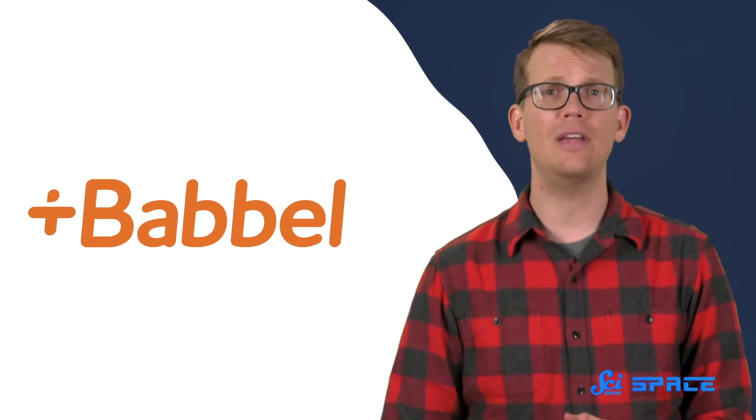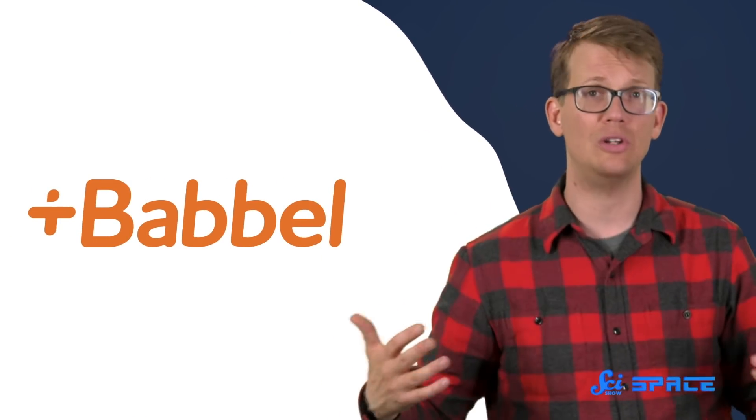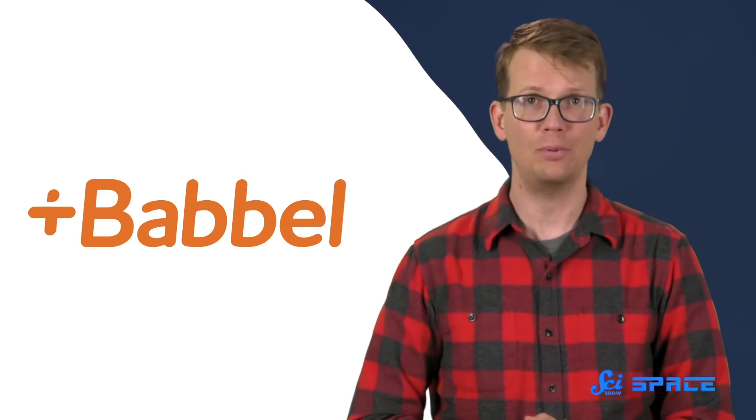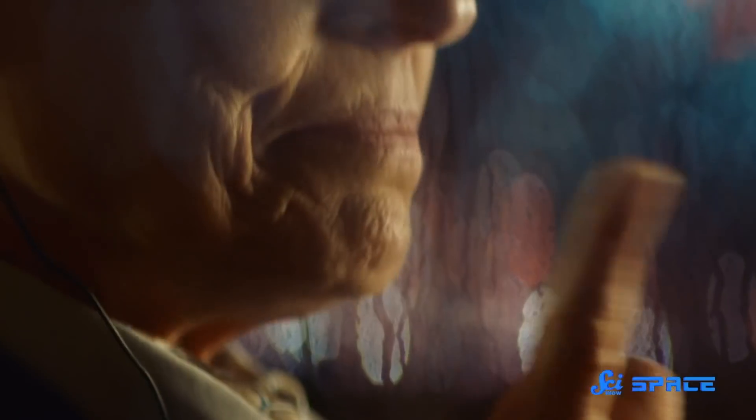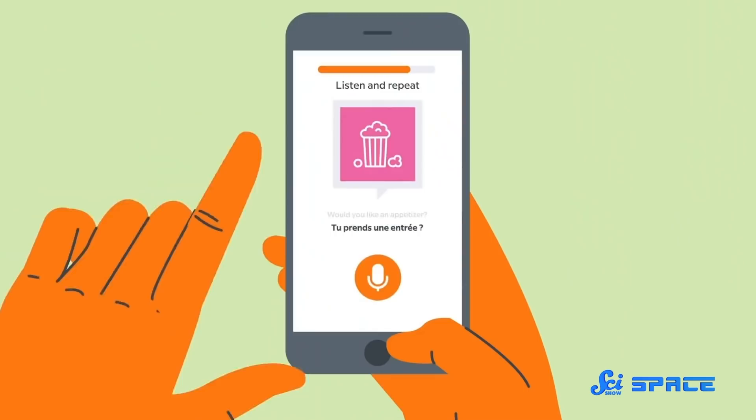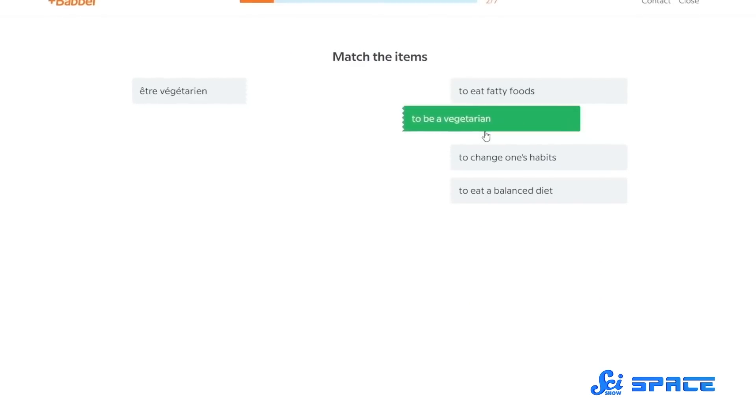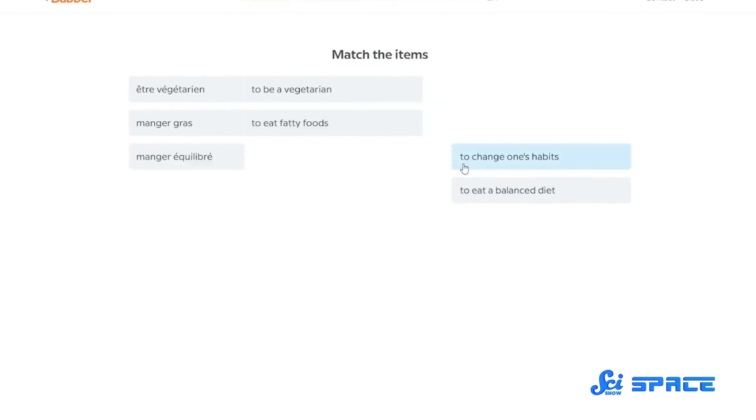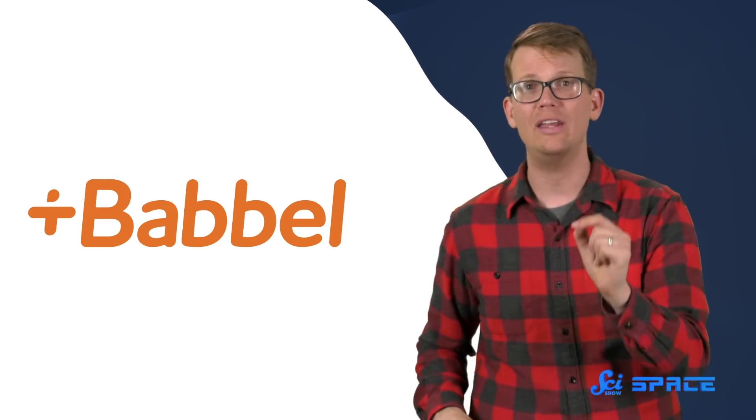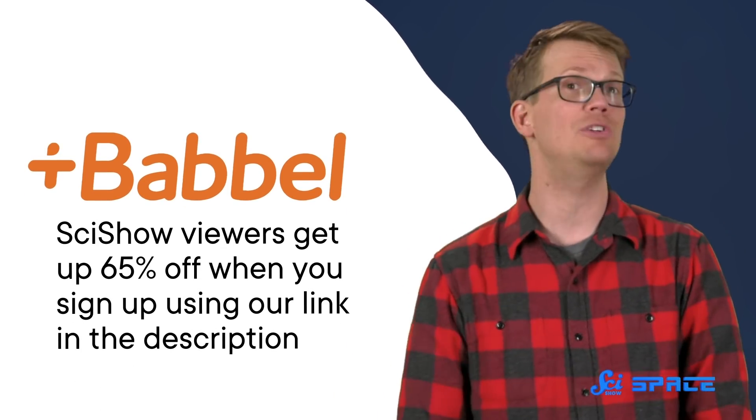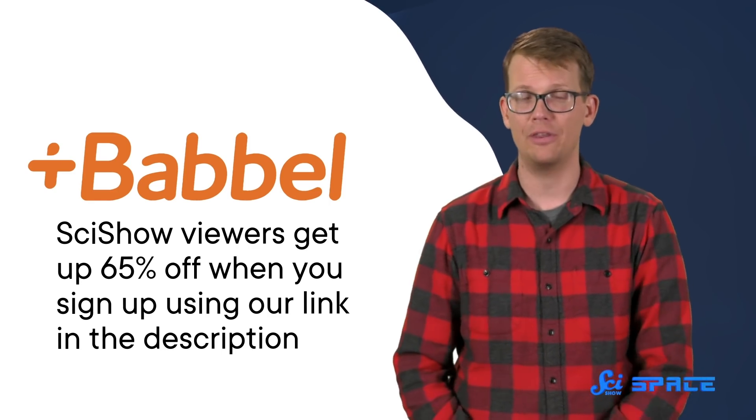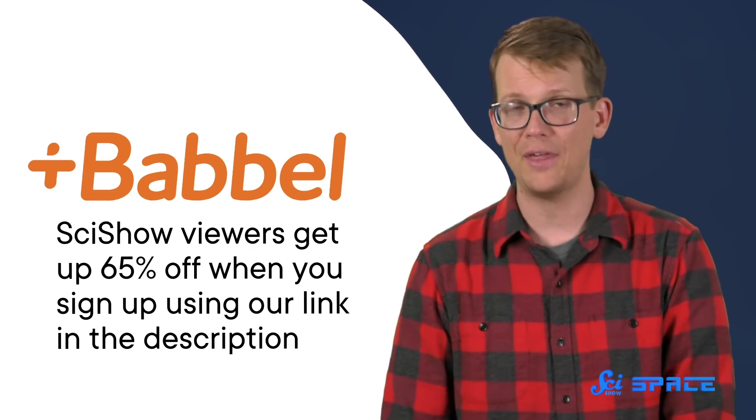It may not be as tough as spotting frozen stars out there in the universe, but learning a new language still takes time and commitment. But Babbel can help. Babbel is a language learning app that helps you use a new language in real-life situations after only five hours of practice. Because when you're learning a language, what you really want is something practical. Whether you're planning a trip abroad, looking to add a line to your CV, or just want to learn, Babbel's bite-sized 10-15 minute lessons are there to help you learn whenever it fits in your schedule. Plus, they build each course based on your native language and personal interests. And as a SciShow viewer, you'll get up to 65% off when you sign up using our link in the description. That's less than $5 a month to learn a new language. You can head there to learn more, and thank you for your support.